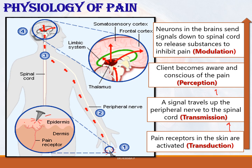To summarize the basic physiology: transduction occurs when pain stimuli activate pain receptors; transmission is when the signal travels up the peripheral nerve to the spinal cord; perception is when the client becomes aware and conscious of the pain; and modulation is when neurons in the brain send signals down to the spinal cord to release substances to inhibit the pain.